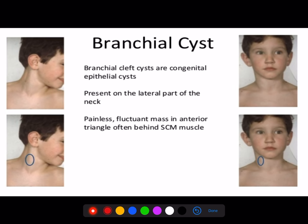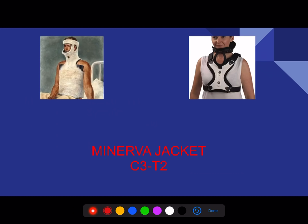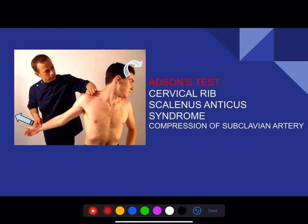Branchial cysts are congenital cysts present on the lateral surface of the neck, close to the top of the sternocleidomastoid muscle. Cold abscess is most commonly seen in TB. A question was given in recent examinations about the Minerva jacket, which is given for C3 to T2.